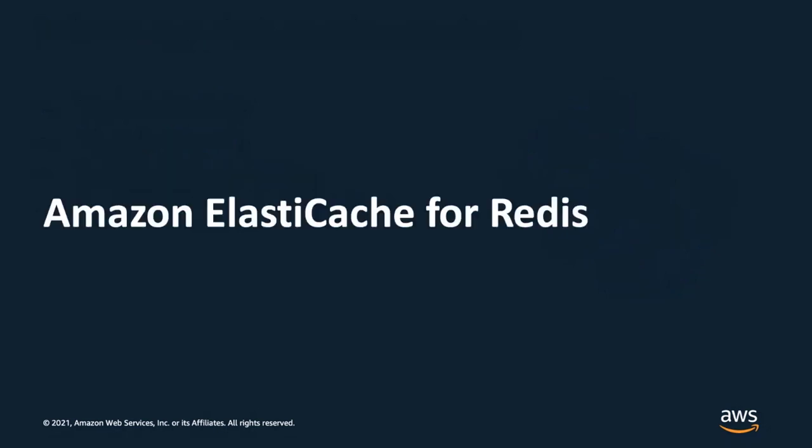Amazon ElastiCache for Redis is a fully managed in-memory cache in the cloud, giving you low-latency in-memory access using a variety of Redis data structures, which help power microservices architectures.